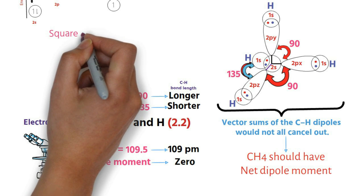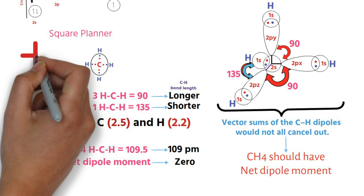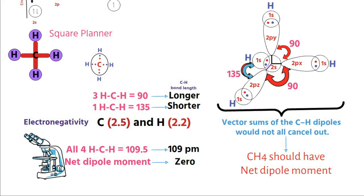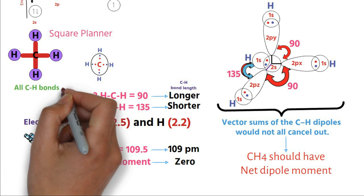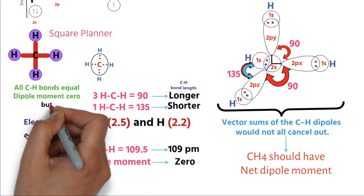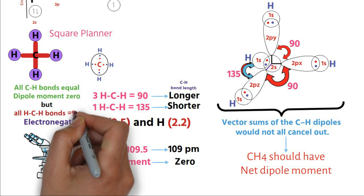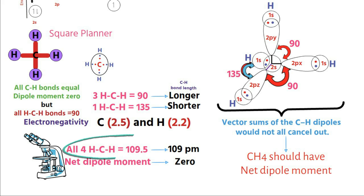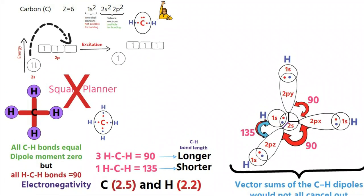Another possibility is, methane can have square planar structure. If so, all CH bonds will be of equal length and net dipole moment will be zero, as observed experimentally. But this structure has all HCH bond angles of 90 degrees, which is contrary to 109.5 degrees observed experimentally. These observations rule out the square planar structure for methane.